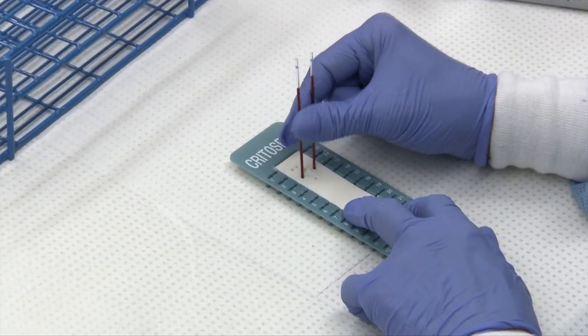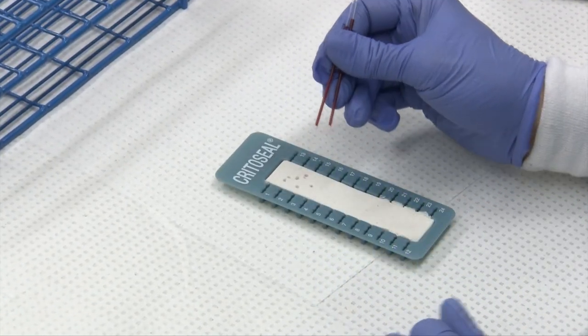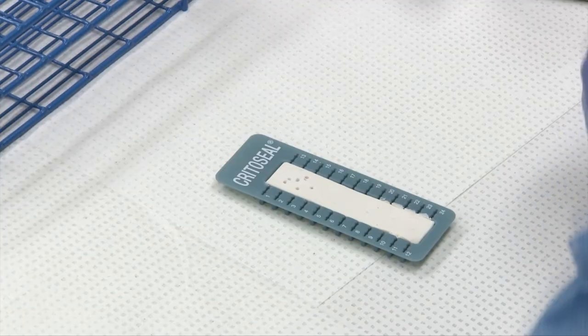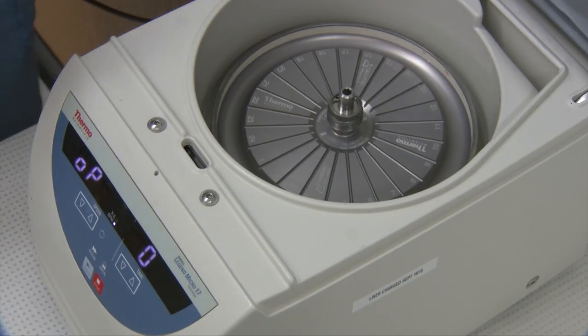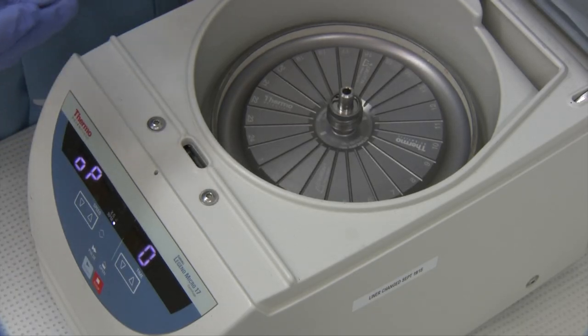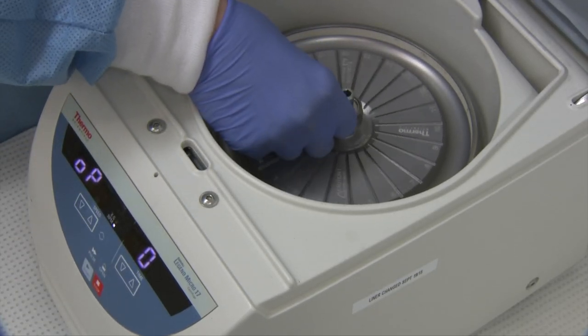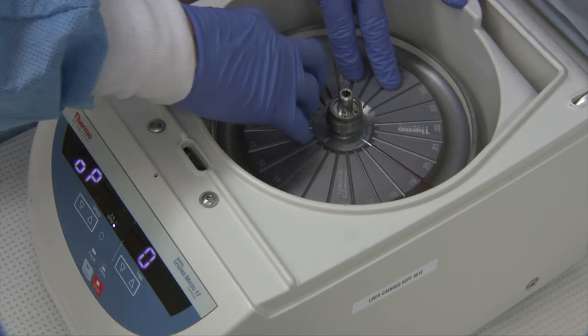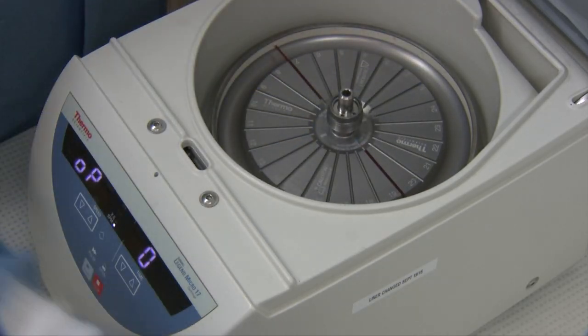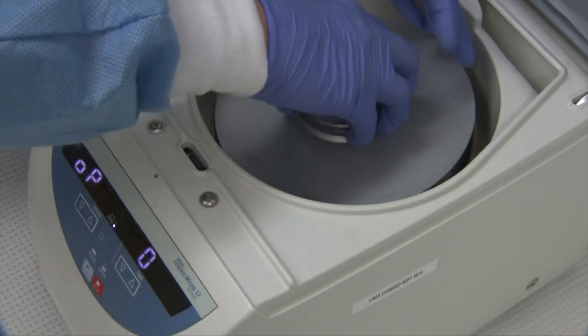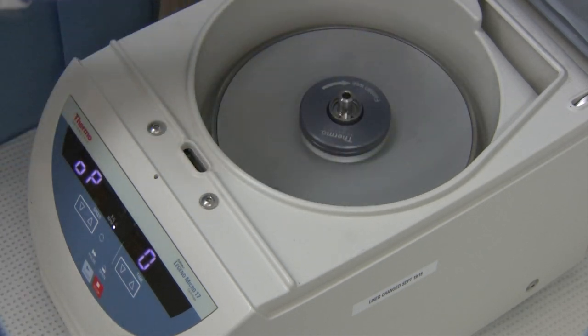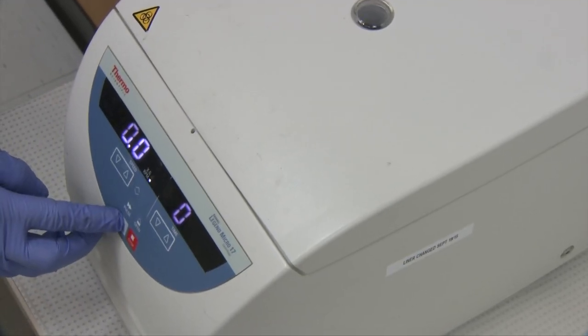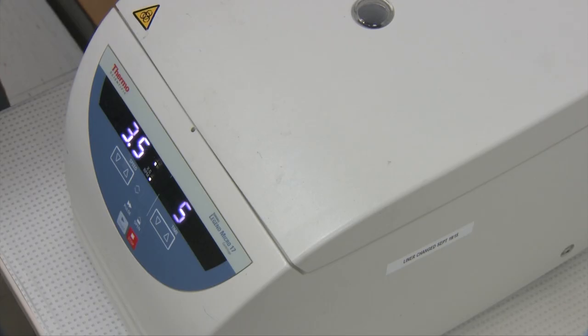I'm going to go over to our microhematocrit centrifuge. The reason I've spun two tubes is you may need two tubes of plasma for your refractometer protein. You want to make sure that your sealant is to the outside ring. If that doesn't happen, you are going to end up with a bloody glassy mess. Put them across from one another so the centrifuge is balanced. This one spins for five minutes at 13,300 rpm.